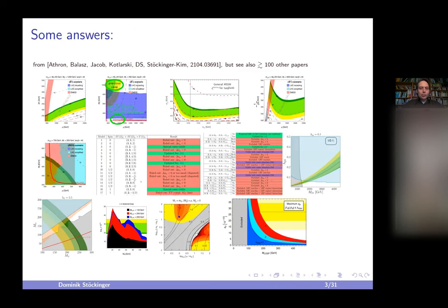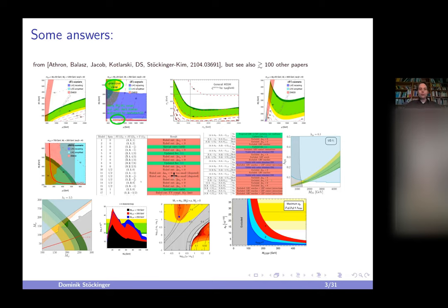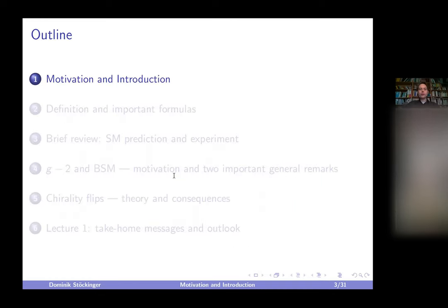These are all the plots from our paper, with around 100 additional papers containing many more plots — many potential explanations. In some red areas, not all models can explain this deviation. As an outlook for the lecture, I will focus particularly on general ideas and concepts so you can understand the generic features of g-minus-2, why it is important for BSM physics, and what we can learn from it.